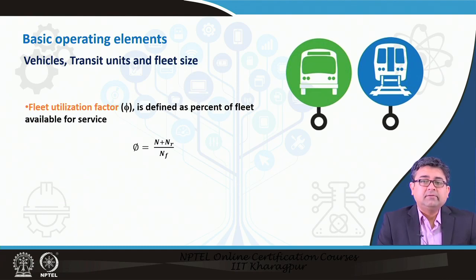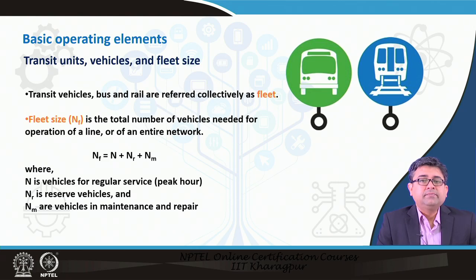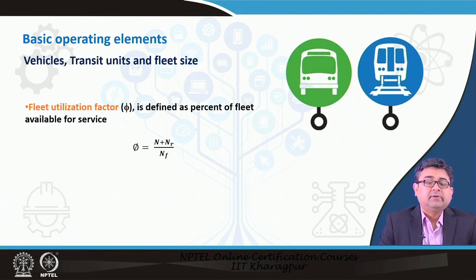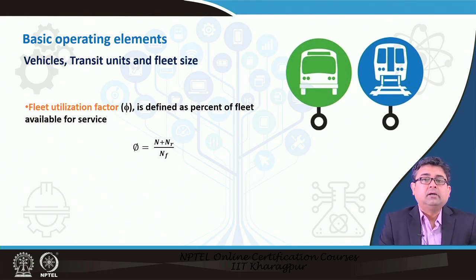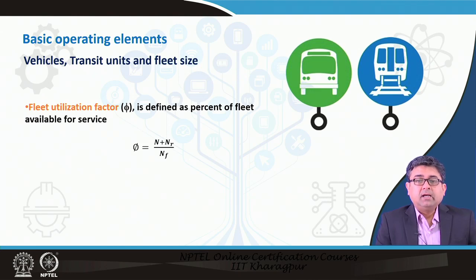The fleet utilization factor is used by transit operators and is defined as the percentage of fleet available for service. It is calculated as (n + n_r) divided by n_f, where n is the regular fleet for peak hour travel, n_r is the reserve vehicles, and n_f is the total fleet size. That ratio gives you the utilization factor.